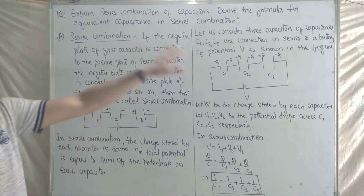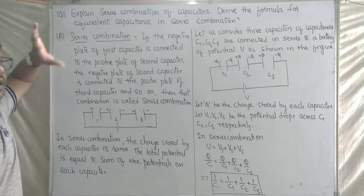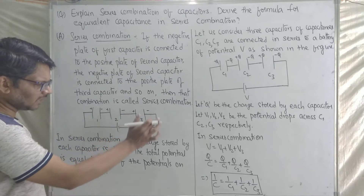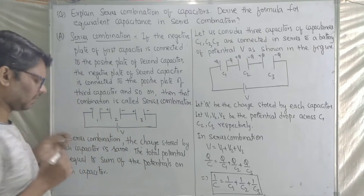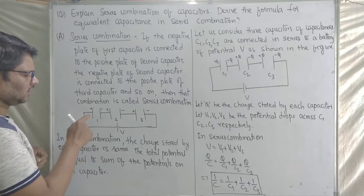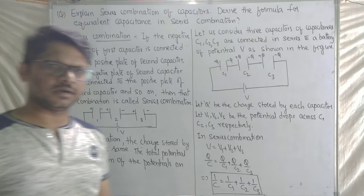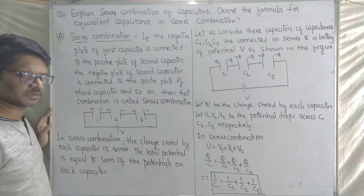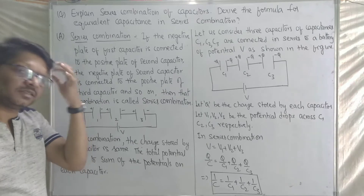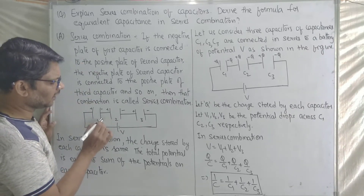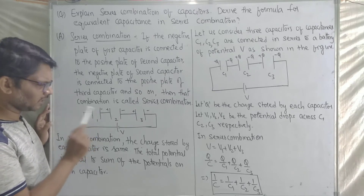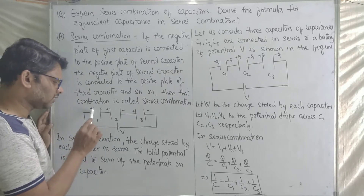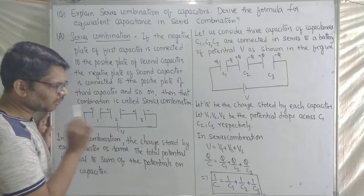Let's discuss the series combination. Series combination means connecting capacitors one after another in a line — that is called series combination. The negative plate of the first capacitor is connected to the positive plate of the second capacitor.